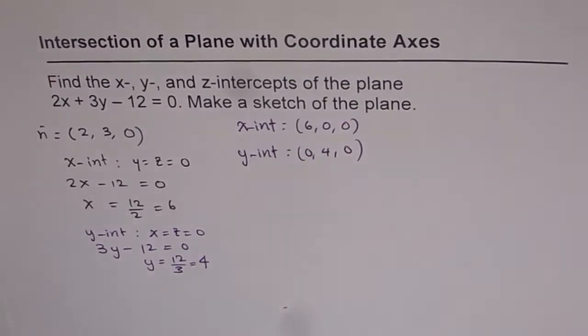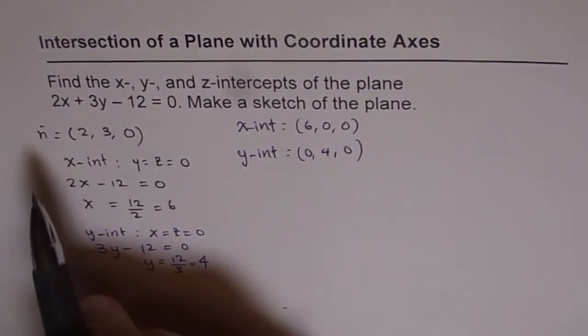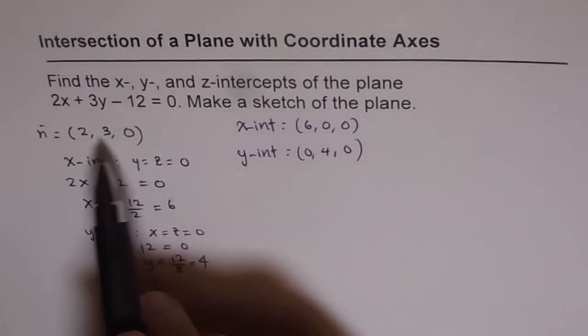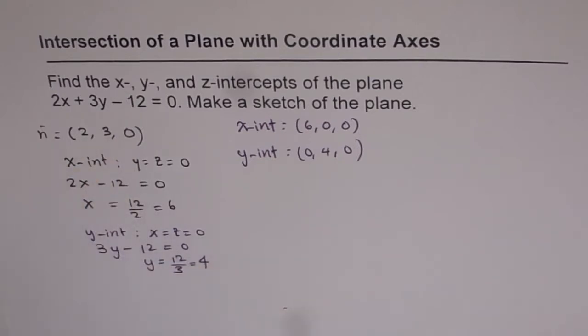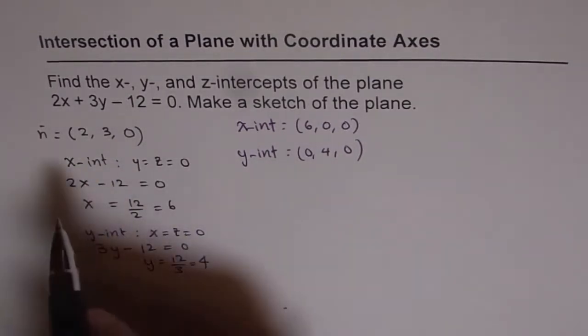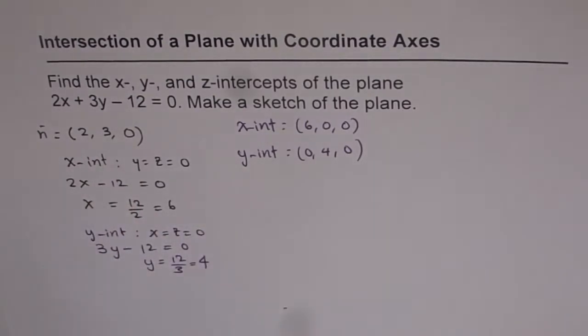These are the two intercepts and we observe that since normal has zero component in z-direction, the plane actually is parallel to z-axis. Let's try to sketch this now. It does not have any z-intercept.